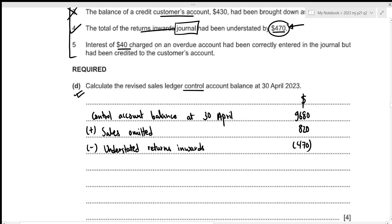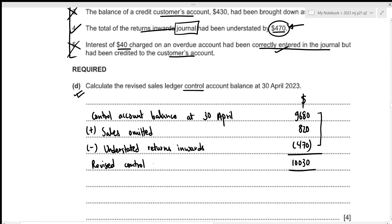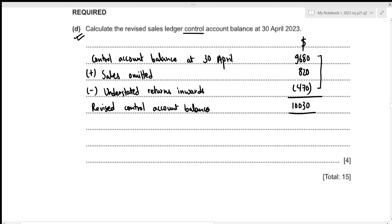Error 5: Interest of 40 charged on an overdue account had been correctly entered in the journal but credited to the customer's account — this only affects customer account balances, so we exclude it. Therefore, the revised SLCA balance is 9,680 + 820 − 470 = 10,030. This is our revised control account balance, which concludes Part 4 and the entire question. If you found this video useful, please like, comment, subscribe, and hit the bell icon. Thank you, bye!